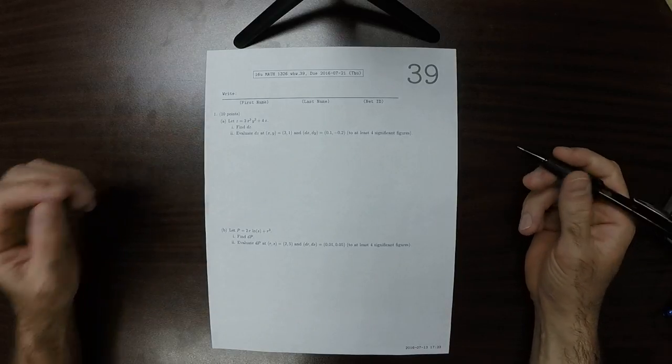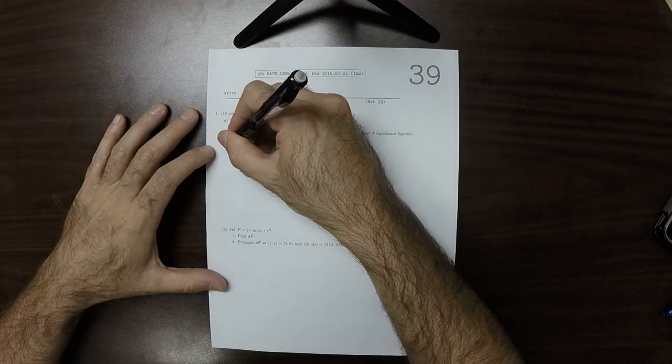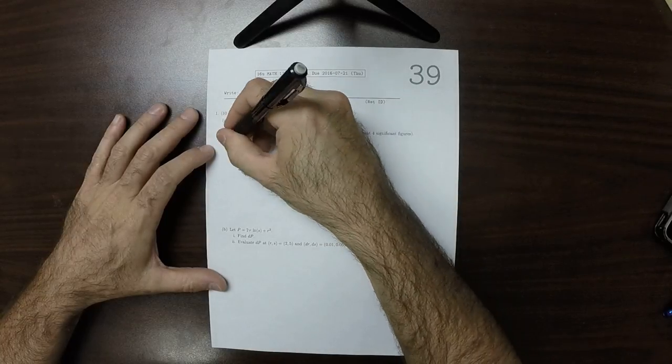This is the key for written homework 39. So part i says find dz.